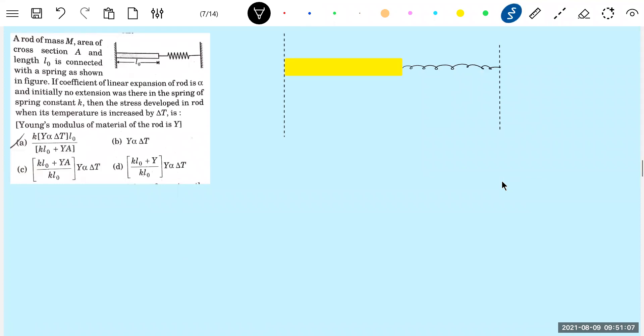Now when I rise the temperature, the rod really wants to expand. At the same time, if the rod expands the spring will undergo compression, the spring force will also come into picture. So definitely the elongation of the rod will be less than the elongation due to thermal expansion what it should have.